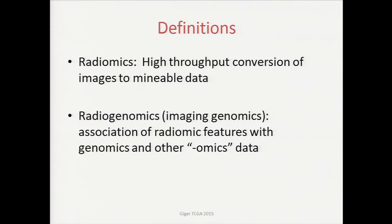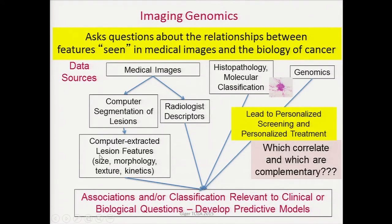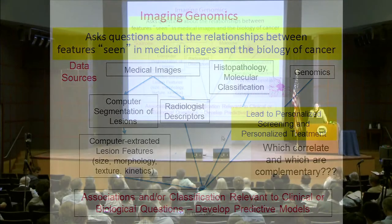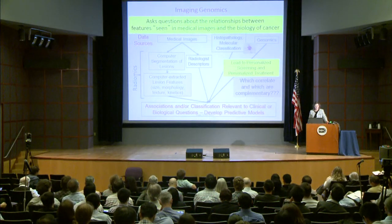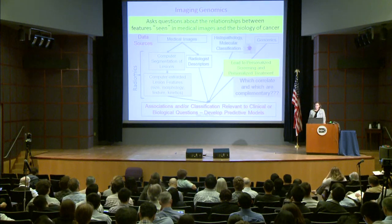A few definitions. Radiomics is the high-throughput conversion of images to mineable data. And radiogenomics or imaging genomics is the association of these features with genomics and other omics data. We're interested in asking questions about the relationship seen in these clinical medical images obtained routinely in practice and their relationship with the biology of cancer — which correlate, which complement — to potentially lead to personalized screening and personalized treatment.